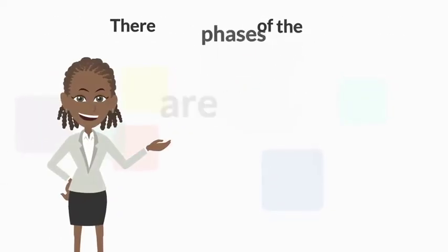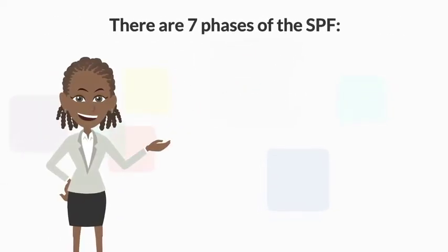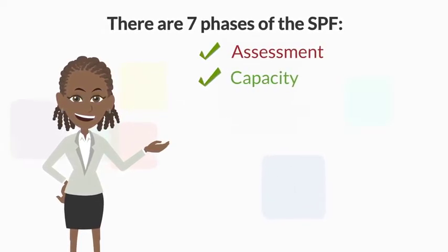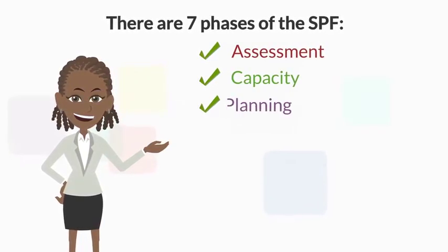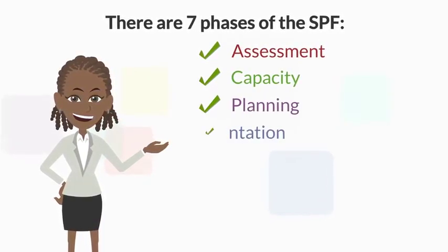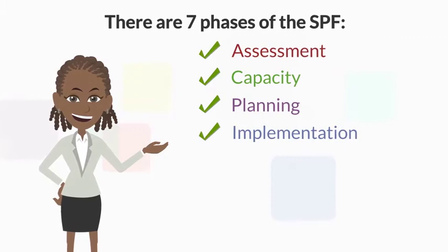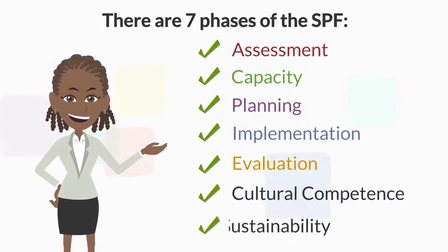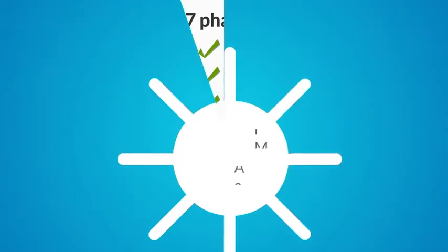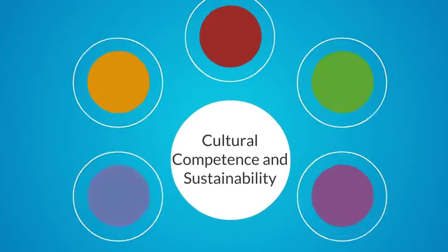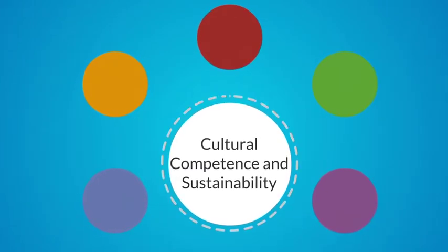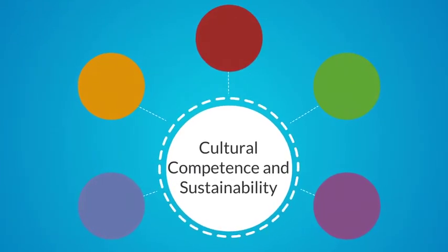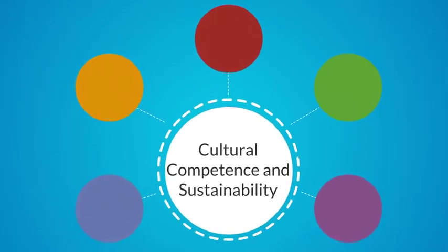There are seven phases of the SPF: Assessment, Capacity, Planning, Implementation, Evaluation, Cultural Competence, and Sustainability. Cultural Competence and Sustainability are at the center of every phase of the SPF and should be considered in each aspect.